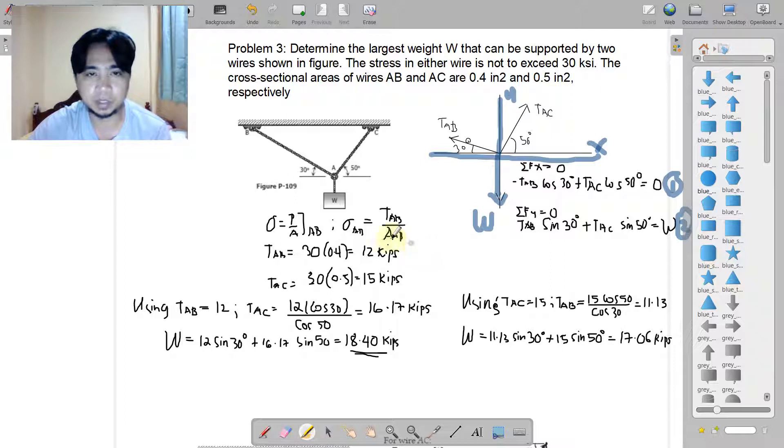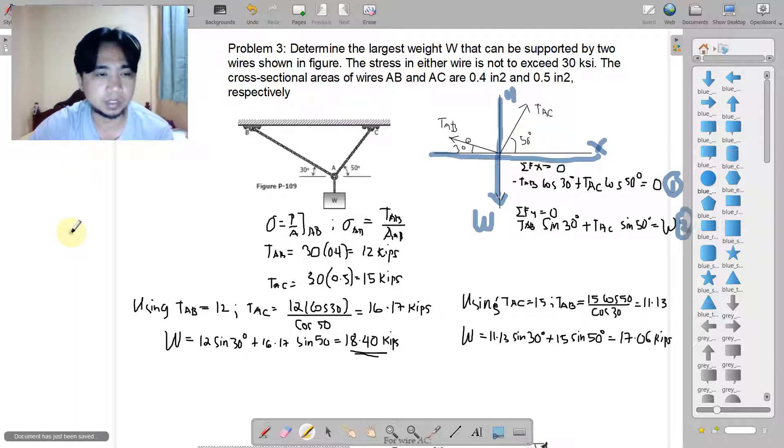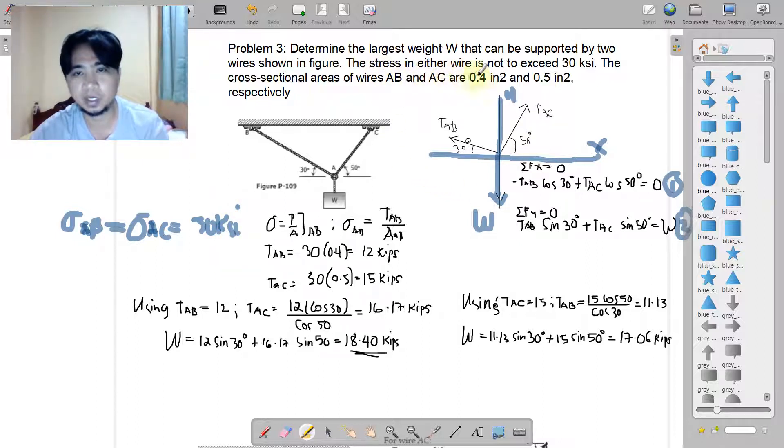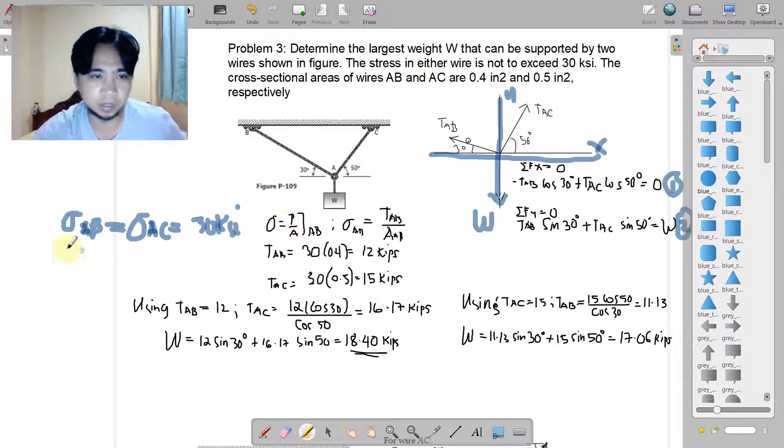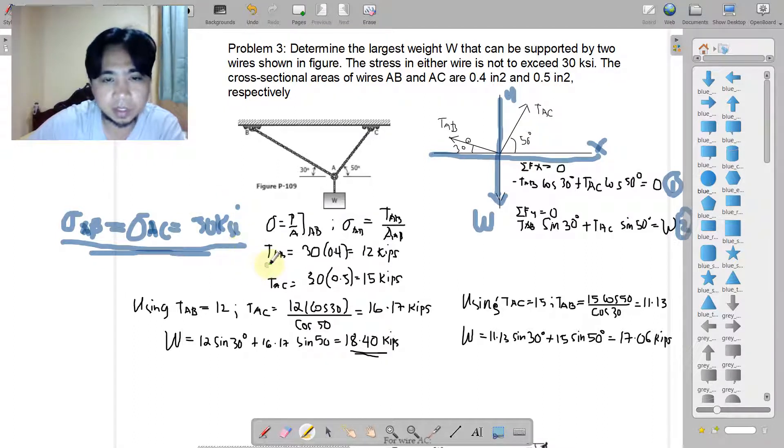In these two equations, from the given we have allowables. The allowable for AB and AC are actually equivalent to 30 KSI. According to the problem, the stress in either wire is not to exceed 30 KSI, so they have the same allowables or limit.